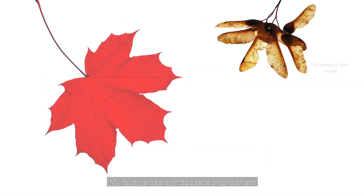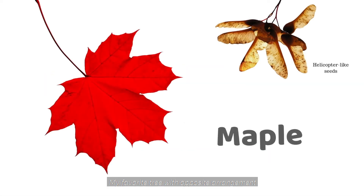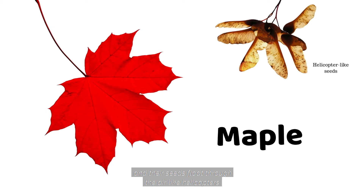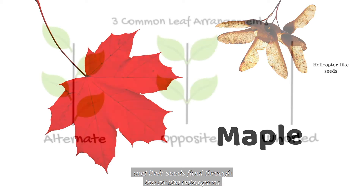My favorite tree with opposite arrangement is the maple tree. They have similar leaves to the sweetgum, but their points or lobes are smooshed looking and their seeds float through the air like helicopters.